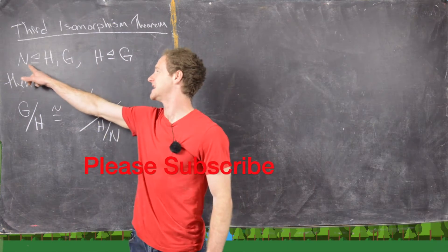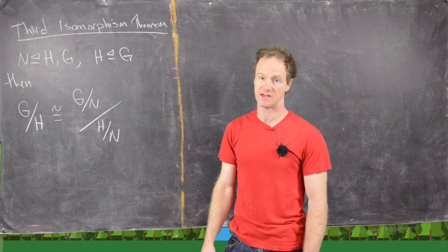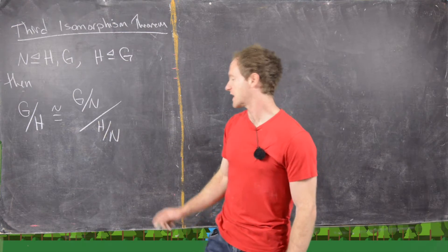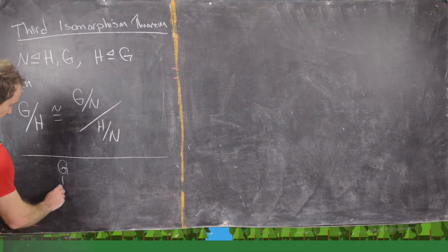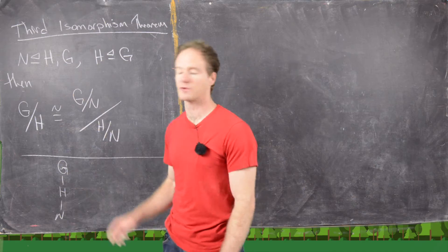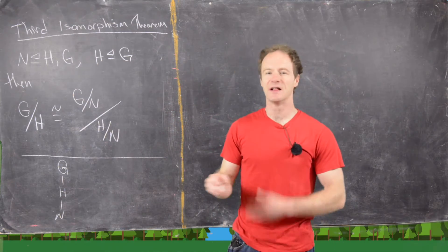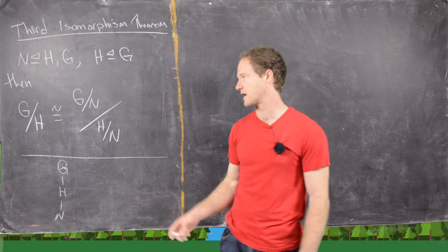Suppose that N is a normal subgroup of H, and N is a normal subgroup of G, and H is a normal subgroup of G. So we have a picture like this: G contains H, and H contains N. Now if N is a normal subgroup of H and H is a normal subgroup of G, it does not automatically mean that N is a normal subgroup of G — that relationship is not transitive. So we're assuming that in addition to this picture.